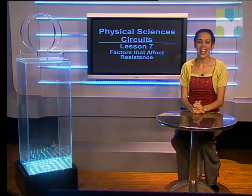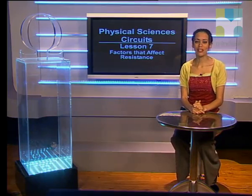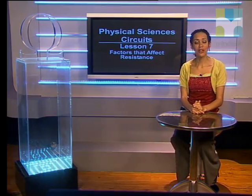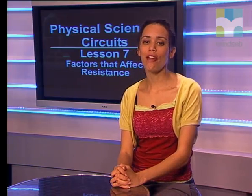Good day Grow Tens. In this lesson we will learn about the factors that affect resistance. Let us start with what resistance is measured in. The unit of resistance is the ohm, and the symbol for the ohm is the Greek letter Omega. An ohm is defined as one volt per ampere.